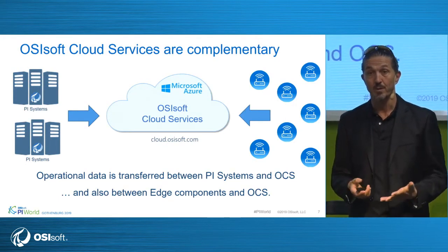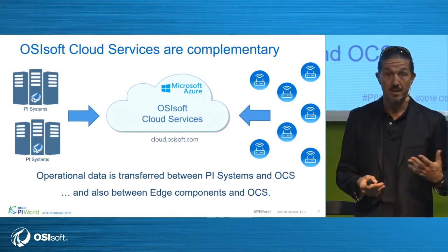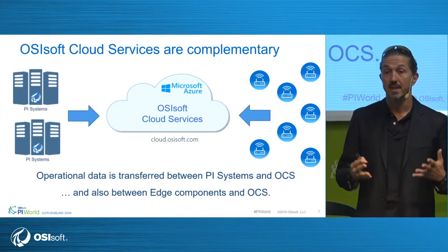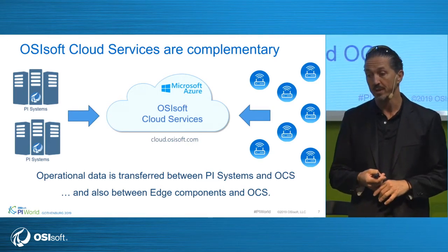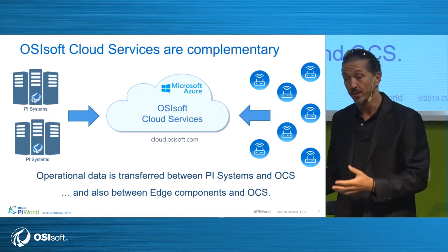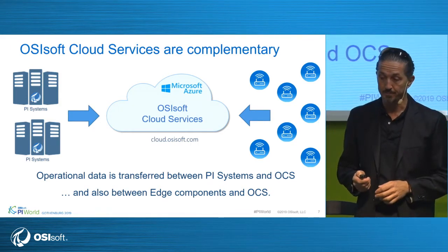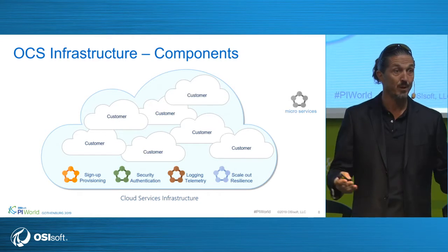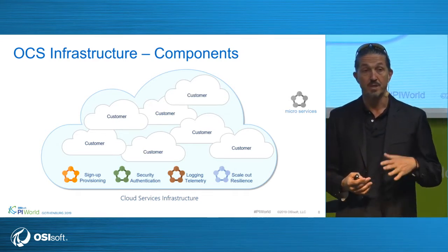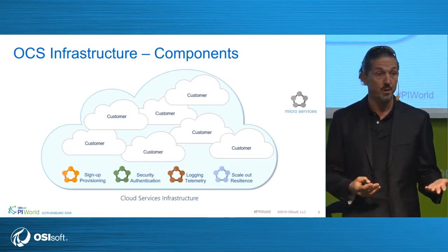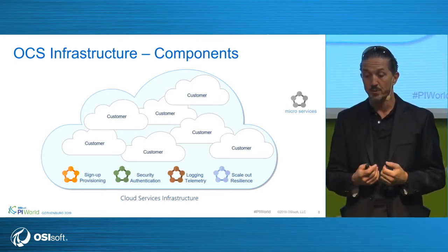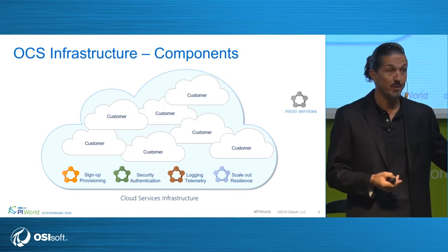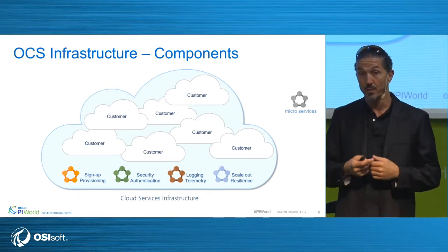OCS is meant to be very complementary and synergistic with the PI System and the data source. We expect people to really use all three different technologies: close to the edge with EDS, on-prem close to the plant for critical operations, and then in the cloud to aggregate and support more scenarios. In terms of components, that's the multi-tenant architecture — supporting multiple customers within the same cluster. We have generic toolsets for signing up and provisioning new accounts, telemetry and monitoring, security and authentication, and other things for scaling out.